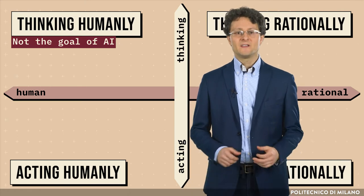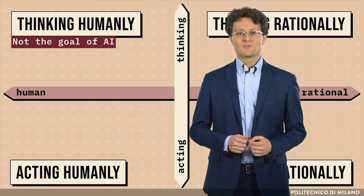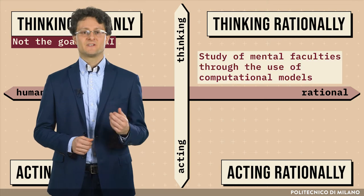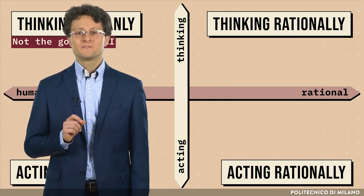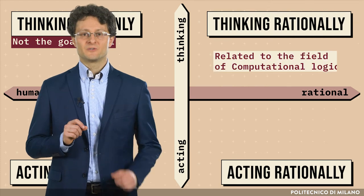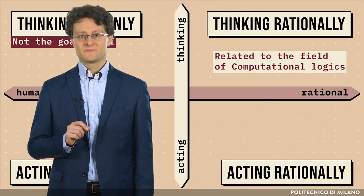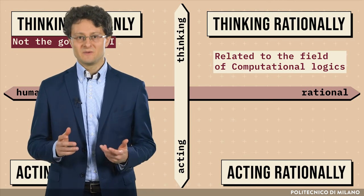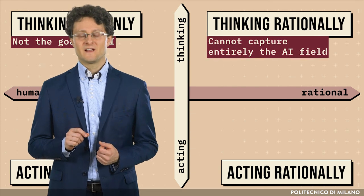Moreover, thinking humanly is different from the study of mental faculties through the use of computational models. That goes instead under the name of thinking rationally, as suggested by Czarniak and McDormand in 1985. Thinking rationally was very related to the field of computational logics, in which the goal is to provide the rigorous rules driving the reasoning. However, not all intelligent behavior is mediated by logical deliberation, and therefore thinking rationally cannot capture the AI field entirely.